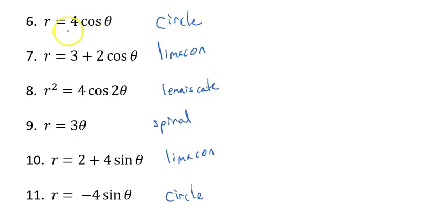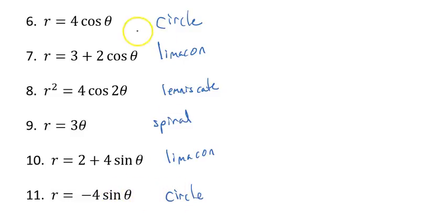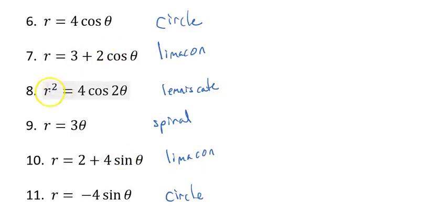Number six, four times the cosine of theta, is just a circle — it looks like a rose formula with n equals one, but a rose with one petal is just a circle. Eleven is also a circle for the same reason. Seven and ten have the plus, so those are limaçons. The lemniscate always has r squared, so that one's easy. The spiral doesn't have any sines or cosines — it's just three times theta.